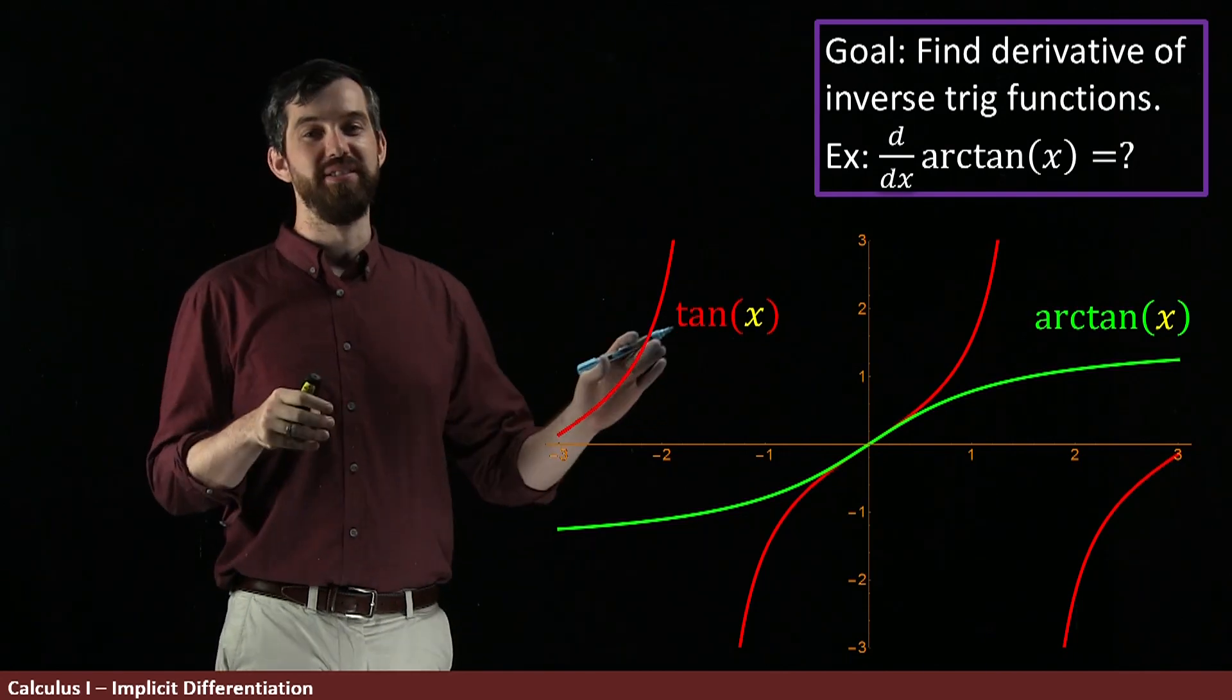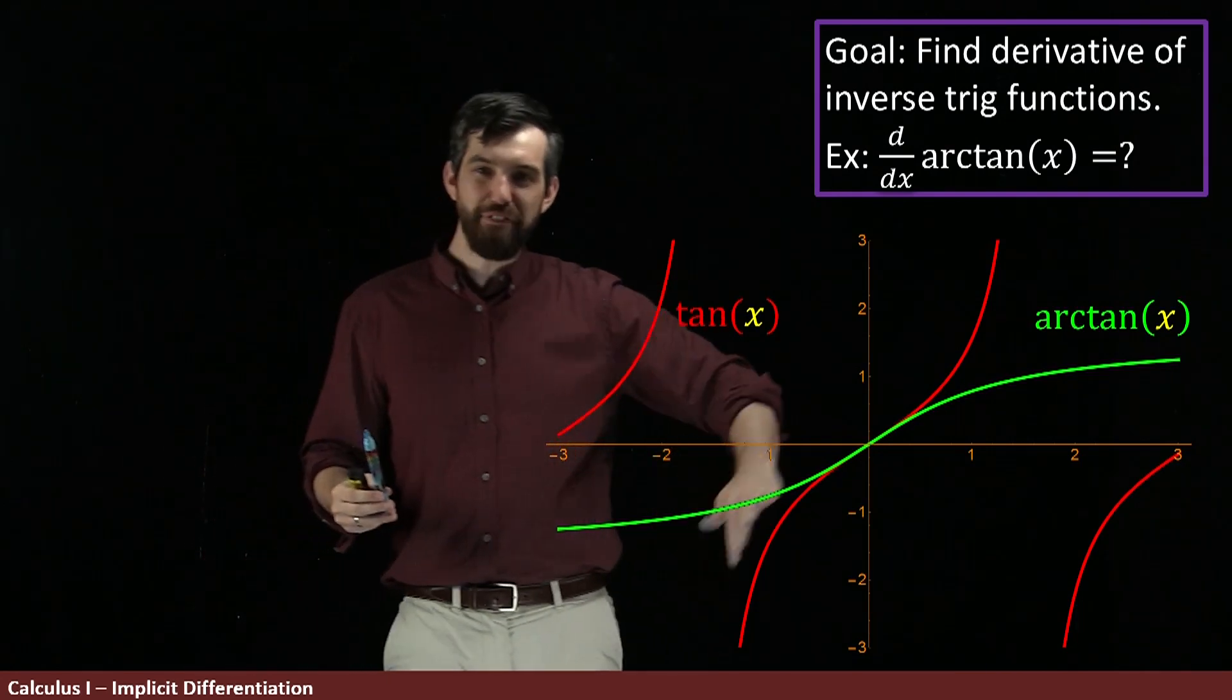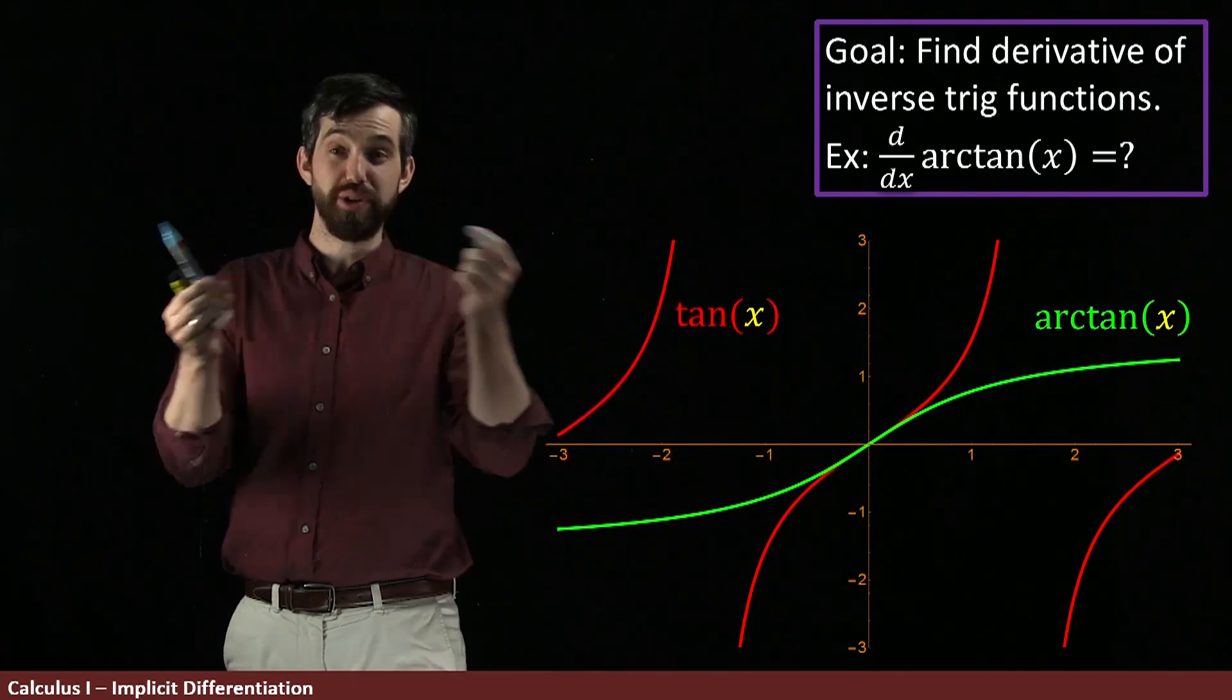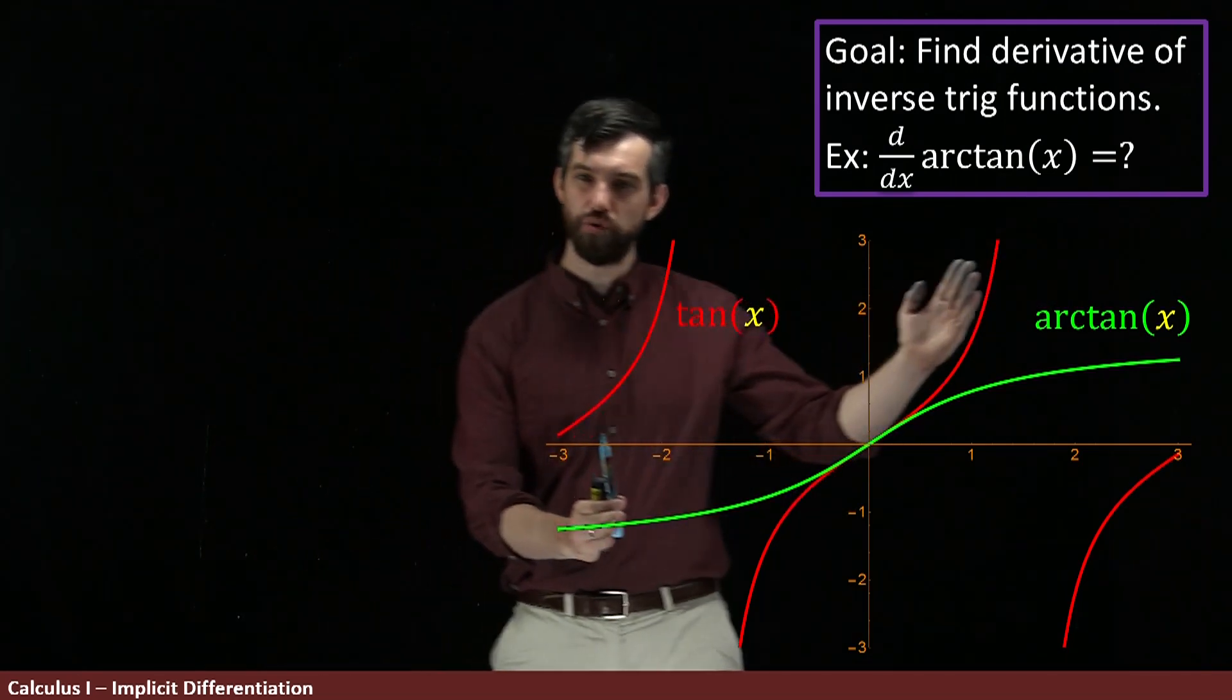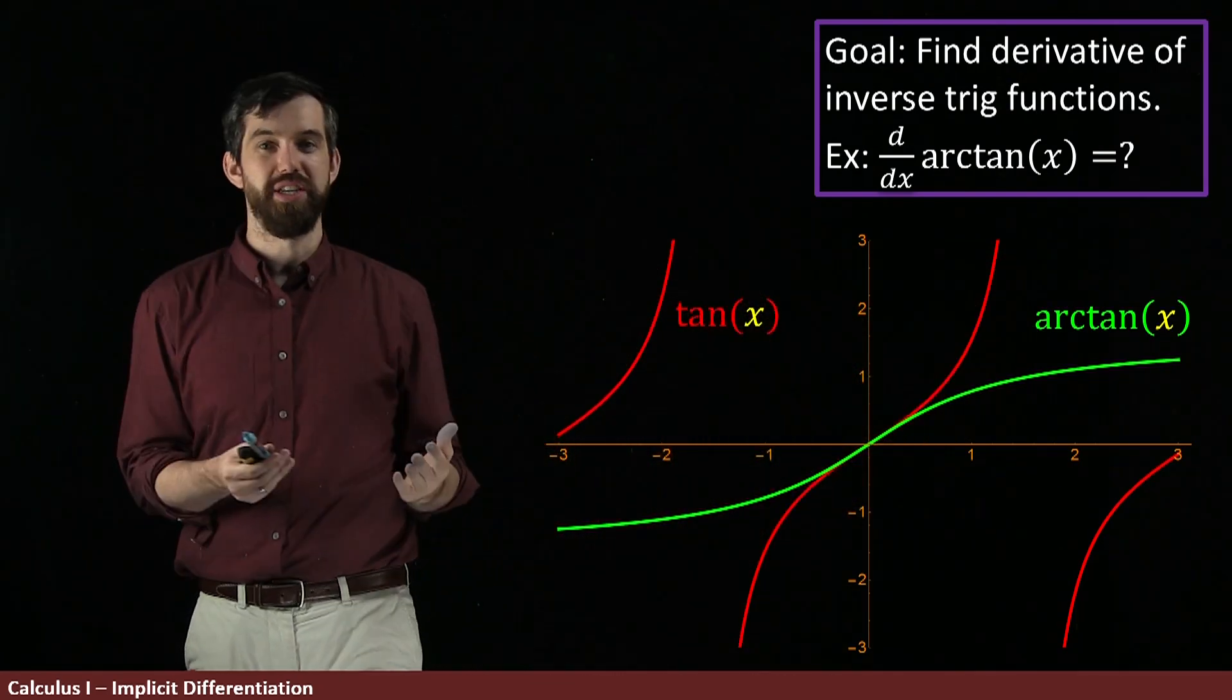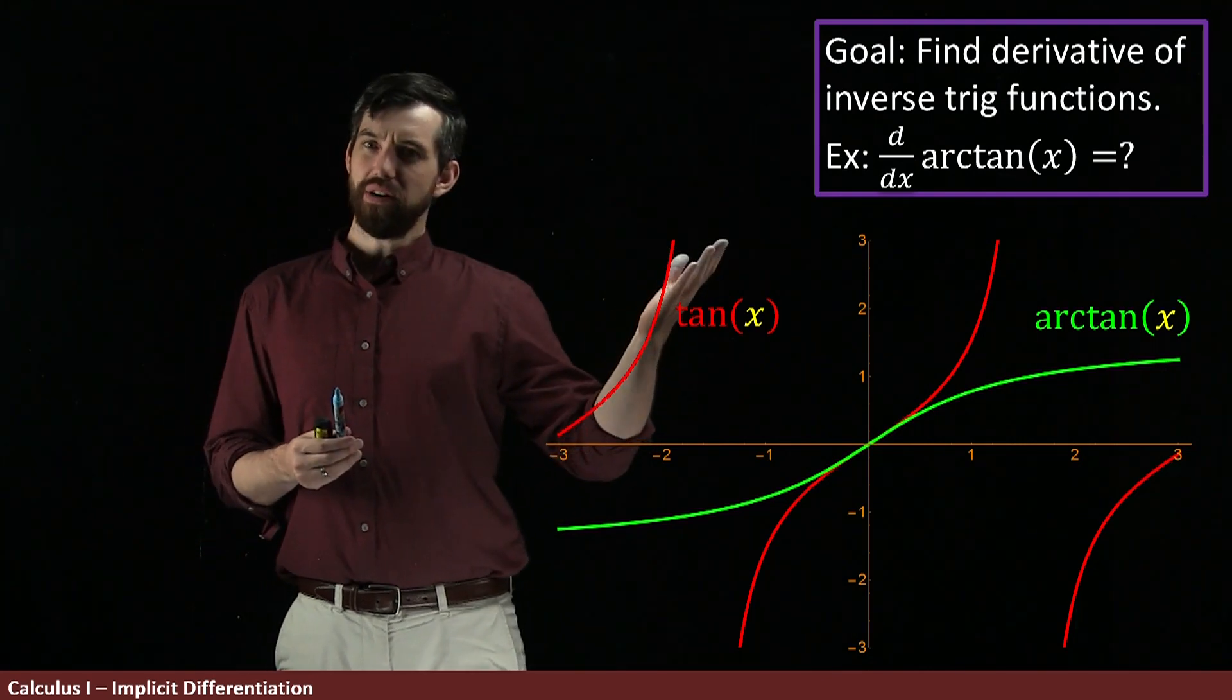So we're back with our old friend arctangent, which we had seen before that we have the graph of tan and that arctan is what happens when we alternate the x and the y, or when we invert over the line y equals x, at least for this restricted domain between minus pi over 2 and plus pi over 2. So then the question is, if I've got arctangent or any of the other arctrigonometric functions, what are their derivatives?